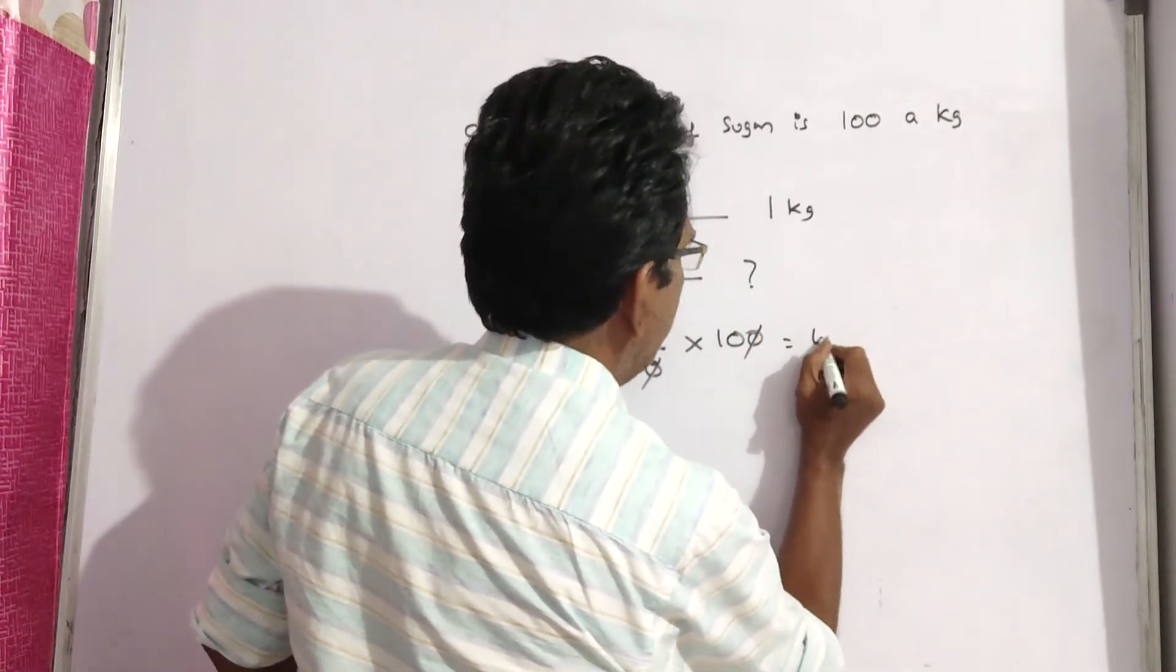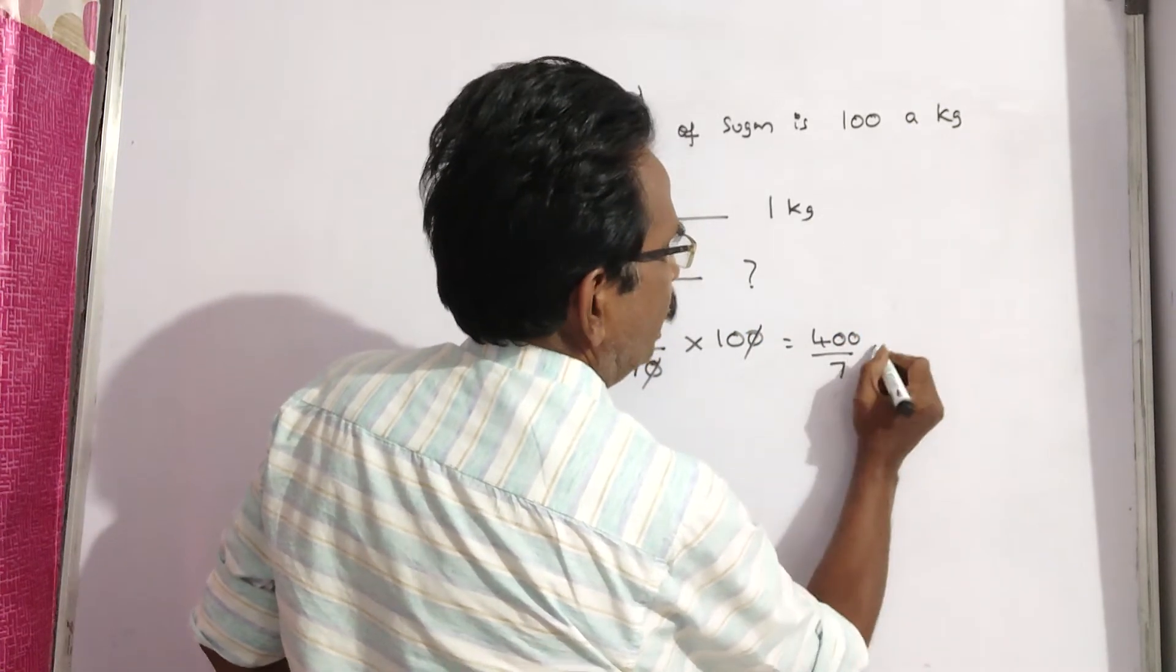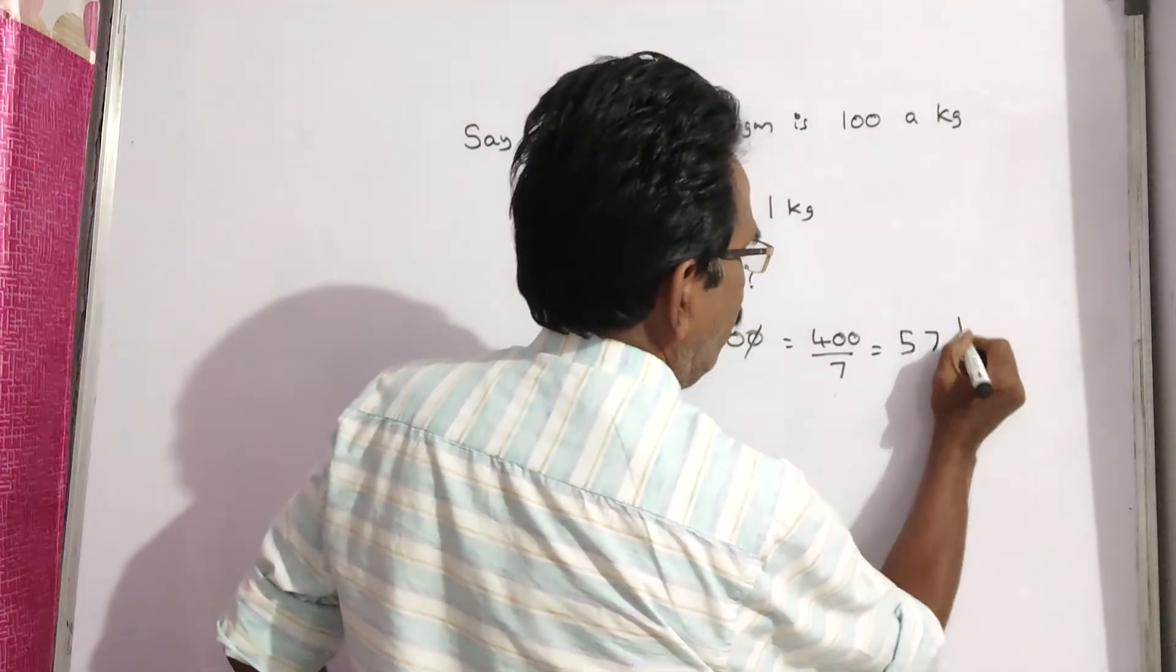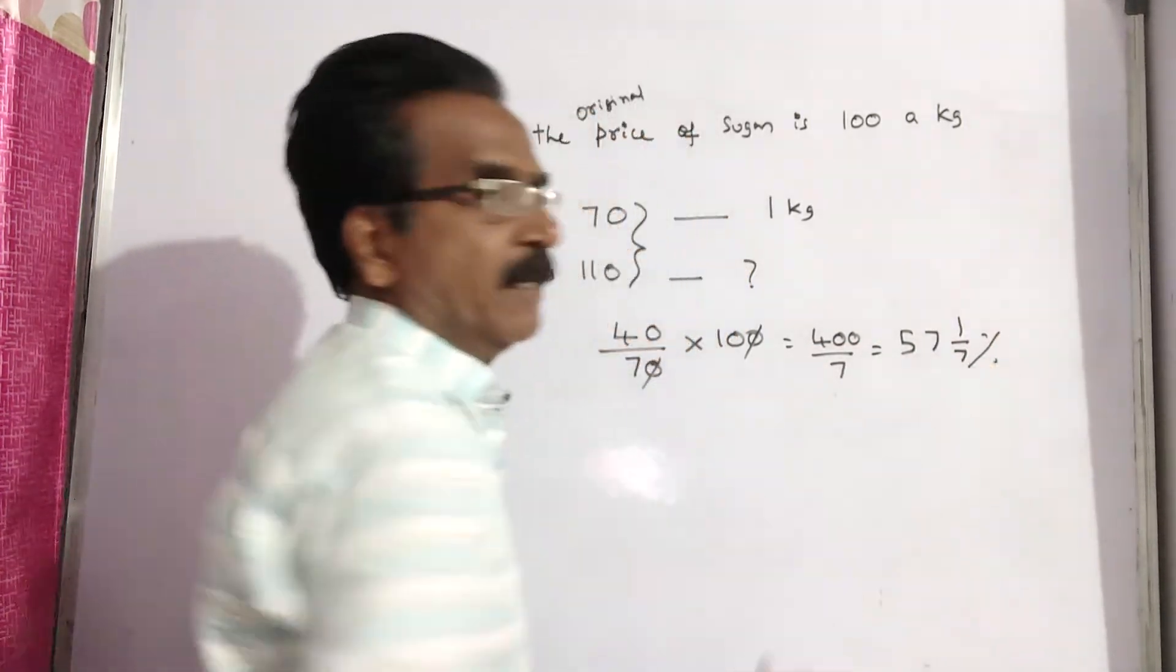So 400 by 7, 400 by 7... 7, 5, so 35, 50, 7, 7, 49. So 57 and 1 by 7 percent, friends.